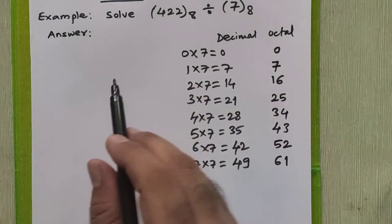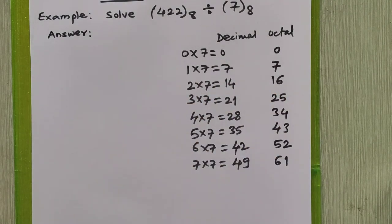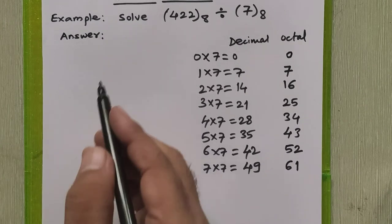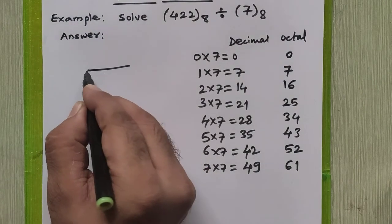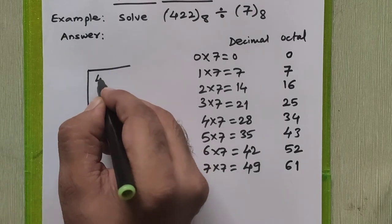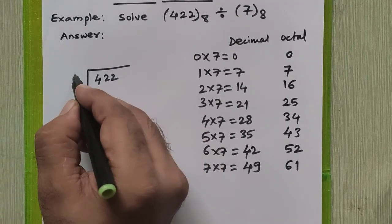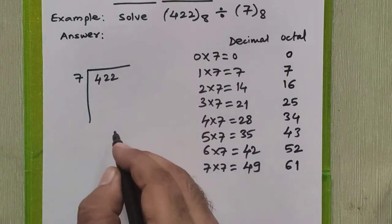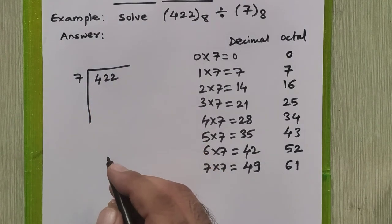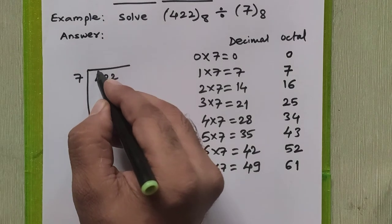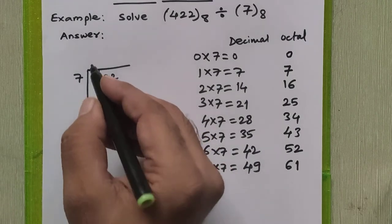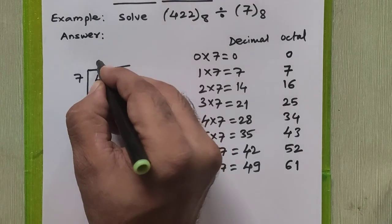We are going to refer this and perform octal division directly the way we perform division in decimals. We will write dividend here, that is 422. Divisor is 7. We are going to write quotient here and remainder will be written at the bottom. First we will try to divide this 4. 4 is not divisible by 7, so the quotient is 0.